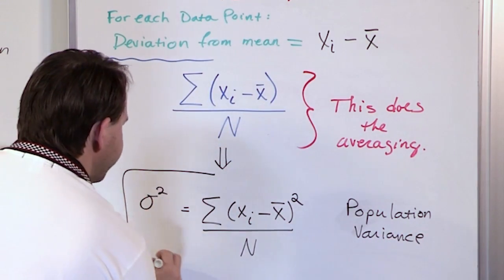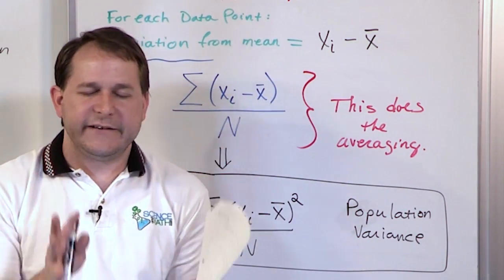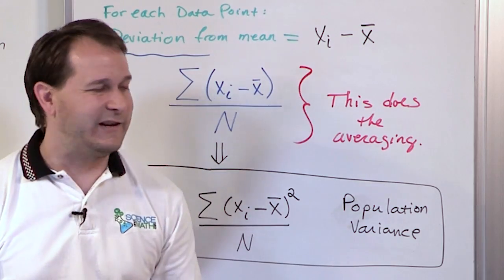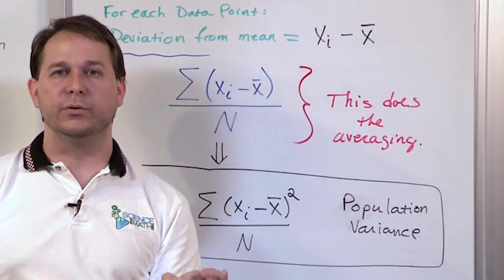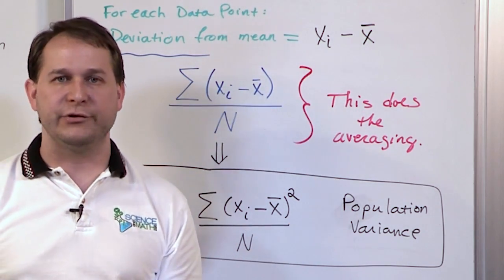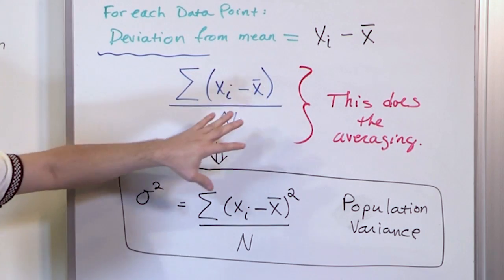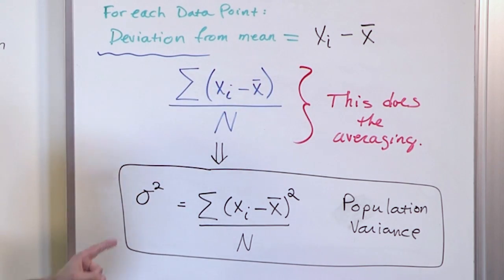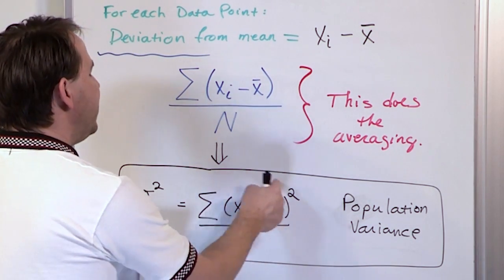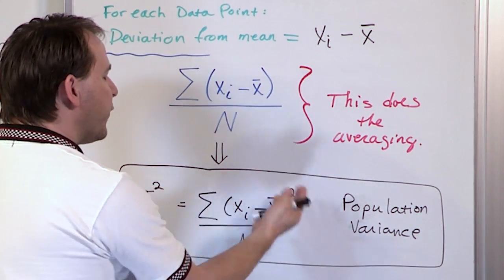Population variance is a core statistical concept — it's absolutely fundamentally central to everything we're going to do. We take every data point, subtract the mean, square it, do that for all data points, and add them all up. So if your mean is 5, you might have 6 minus 5, 7 minus 5, 8 minus 5, 10 minus 5 — and you square each of those differences.